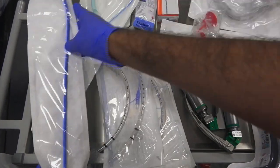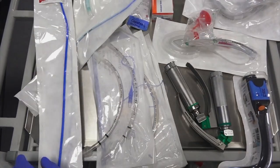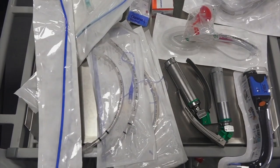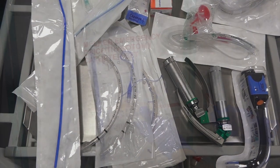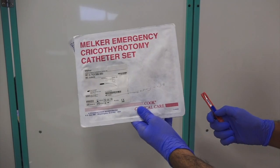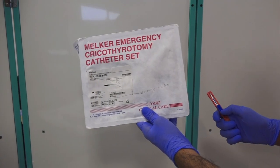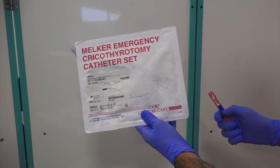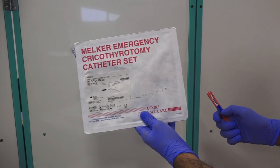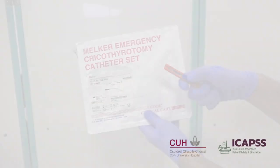If deemed necessary, also obtain and check the Aintree intubation catheter and flexible intubating bronchoscope. Obtain and check the emergency front of neck access kit.